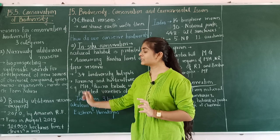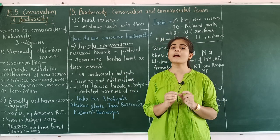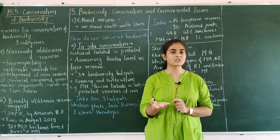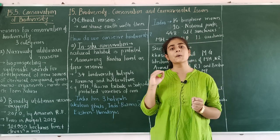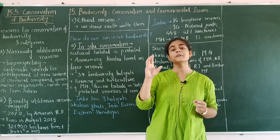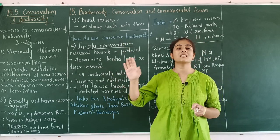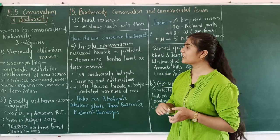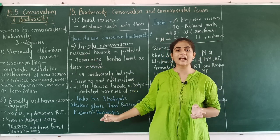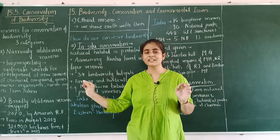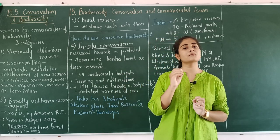The third reason is the ethical reason. A simple thing is that biodiversity is present on Earth and we should equally share the Earth. Wherever you are living, there is biodiversity. If you are part of biodiversity, then wherever you are, you should conserve it and not destroy it. This is the ethical reason for which we should conserve our biodiversity. These are the three types of reasons we studied.